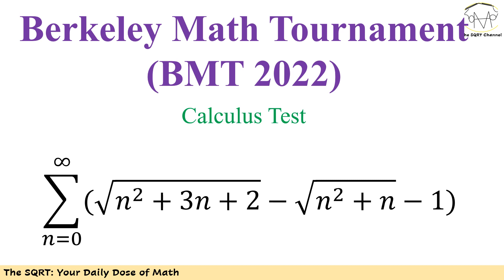Hello everyone, welcome to the SQRT channel. In this video we are going to talk about a problem from Berkeley Math Tournament from 2022, but this time we are going to have calculus in this problem. We are going to find the sigma that starts from zero to infinity, and for n inside the sigma we have √(n²+3n+2) minus √(n²+n).